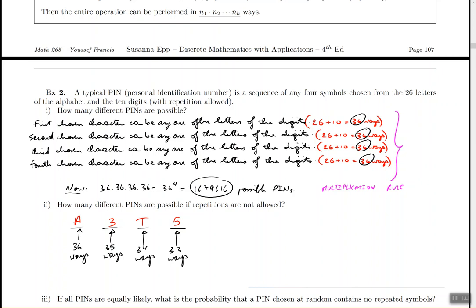So A3T5 is just one possible PIN, but the same logic can be applied if I choose any other random letter or symbol. So now the question is, what's the total? And so again, since the first step can be done in 36 ways, the second step can be done in 35 ways, and so on and so forth, then the total number of PINs is going to be, the total is 36 times 35 times 34 times 33. And that's again using the multiplication rule. So roughly speaking, 1.4 million possible PINs have no repeats.